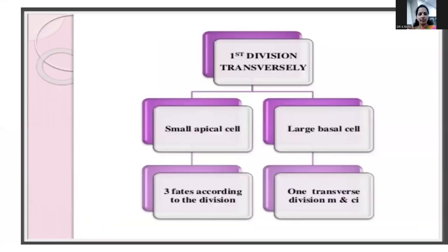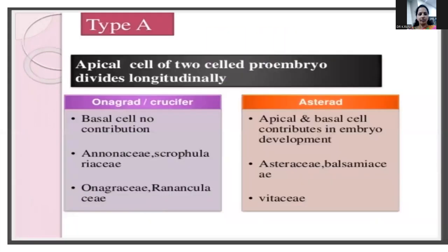In the first division, transversely, a small apical cell and a large basal cell are formed. The apical cell of the two-celled pro-embryo divides longitudinally. The types are: cruciferate, onagra, asterot, karyophyllate, solanard, and kinopodial — these five or six types as described.